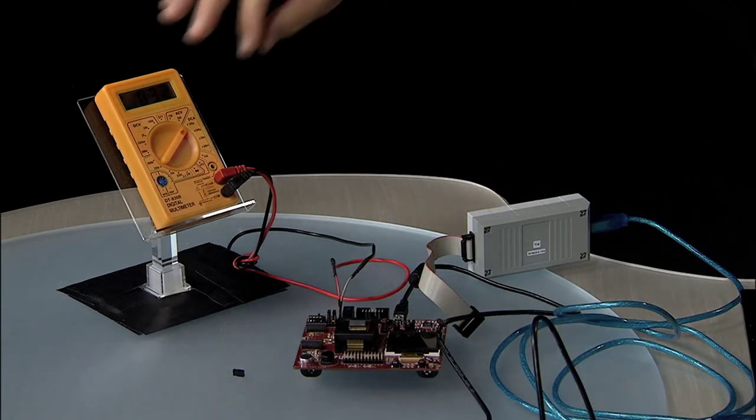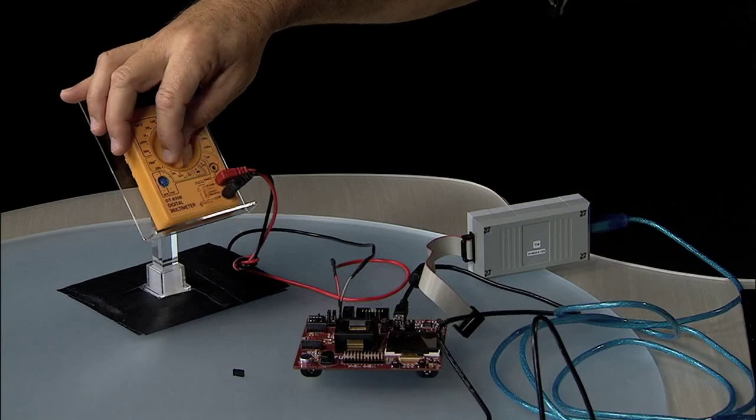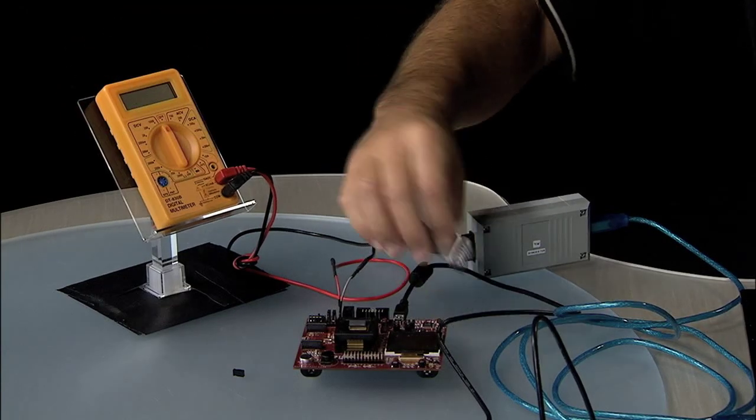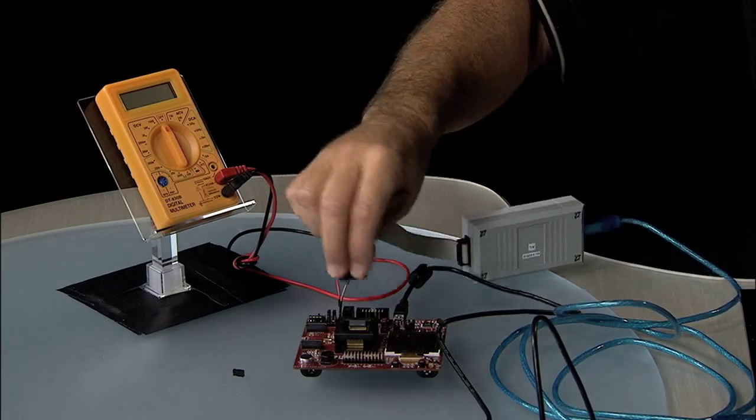So now you can reach over, turn off the multimeter, and reconnect the JTAG cable.